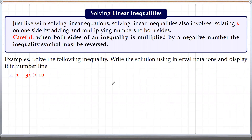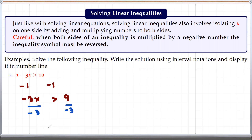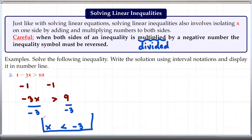The next example: 1 minus 3x greater than 10. Again, our goal is to isolate x. First, subtract 1 from both sides: 1 minus 3x minus 1 gives negative 3x greater than 9. We still need to isolate x, so divide both sides by negative 3. Since we are dividing by negative 3 — which is like multiplying by negative one-third — we need to flip the sign. So this becomes x less than negative 3. That is the solution.